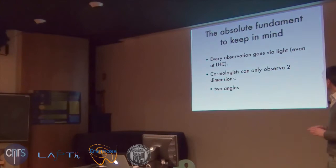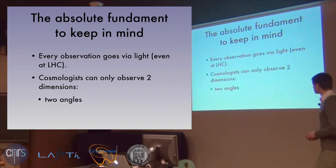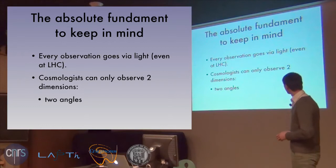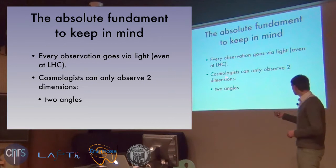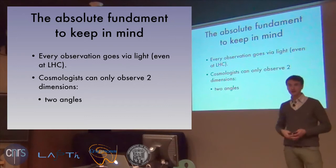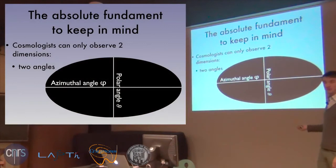This is the most important message I can give you about cosmology: every observation is via light. We don't see stuff or feel stuff moving — we only observe light as it enters our receptors. Moreover, cosmologists only observe two dimensions: we have two angles. We have a sky and everything is projected onto it. The map of the universe fits into one plane — just two angles, theta and phi — it's only a sphere.